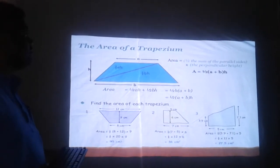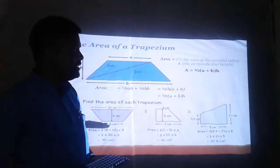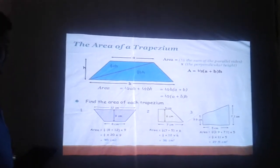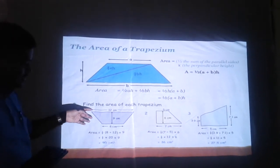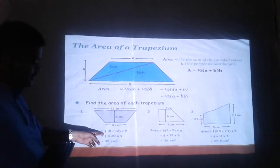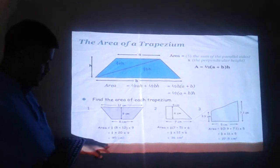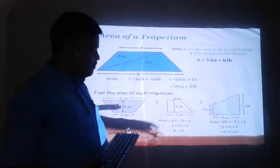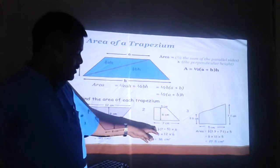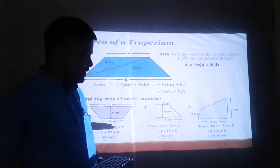Now let us use the formula for the area of trapezium. Area of trapezium equals one-half into the sum of the parallel sides into the perpendicular height, that is one-half into (a plus b) into h. In the first example, the parallel sides are 8 cm and 12 cm and the perpendicular height is 9 cm. Area equals one-half into (8 plus 12) into 9 — that is one-half into 20 into 9 — equal to 90 cm squared. In the second example, perpendicular height is 6 cm and parallel sides are 5 cm and 7 cm. Area equals one-half into 12 into 6, equal to 36 cm squared.